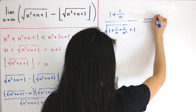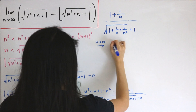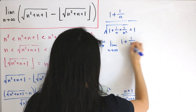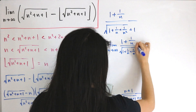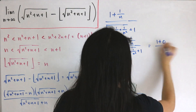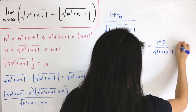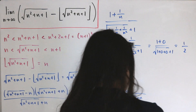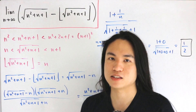Now we take the limit as n approaches infinity. We have the limit of 1 plus 1 over n, all over the square root of 1 plus 1 over n plus 1 over n squared, plus 1. As n approaches infinity, 1 over n and 1 over n squared both approach zero, so this becomes 1 over the square root of 1 plus 1, which equals one half. Therefore the limit equals 1/2.